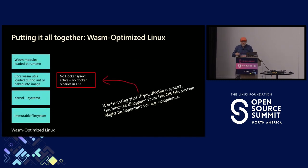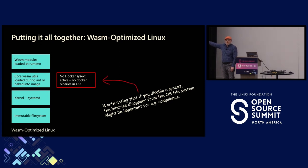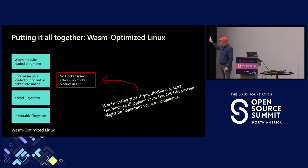Hence the concept of a Wasm-optimized Linux. If we can have container-optimized Linux, let's have a Wasm-optimized Linux — similar kind of thing. You're going to build an immutable file system, you need your kernel and systemd, but now instead of having container runtimes, you've got WebAssembly runtimes. Another nice thing here: because containerd is delivered as a sysext, I can just easily disable that. Then I don't even have the container runtimes present in the system — it's not just that they're not running, those files are not there — which can be important when you're talking about compliance requirements.